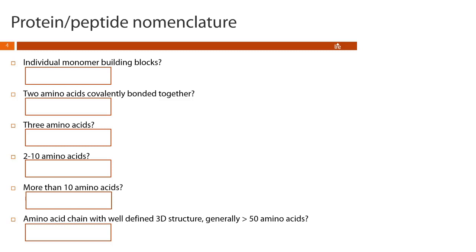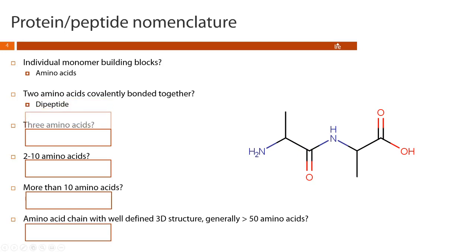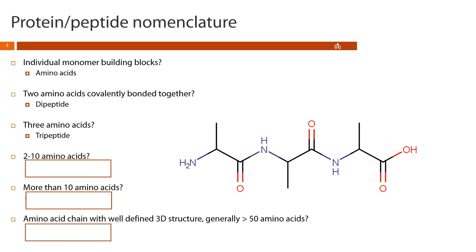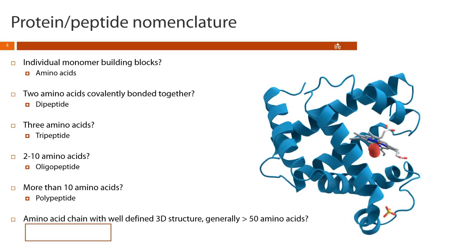Similar to carbohydrates, we're going to talk about proteins using polymer notation. The individual monomer building blocks for proteins are amino acids. If we have two amino acids covalently bonded together, we have a dipeptide. Three amino acids would make a tripeptide. Two to ten would be an oligopeptide. More than ten would be a polypeptide. An amino acid chain with a well-defined 3D structure — generally more than 50 amino acids — that has formed a native folded structure is what we're going to refer to as a protein.